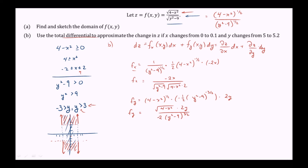Now we evaluate fx and fy at x equals 0 and y equals 5. For fx at (0, 5), substituting x equals 0 gives 0 in the numerator, so fx equals 0. For fy, canceling the 2's, we get the square root of (4 minus 0), which is 2, times 5, divided by negative (25 minus 9) to the three-halves, which is 16 to the three-halves, giving us negative 10 over 64.